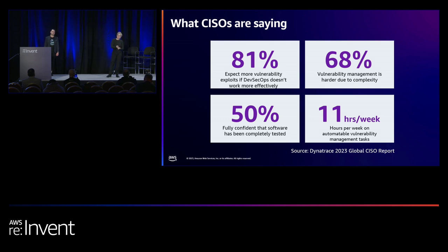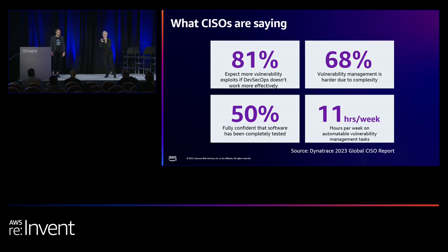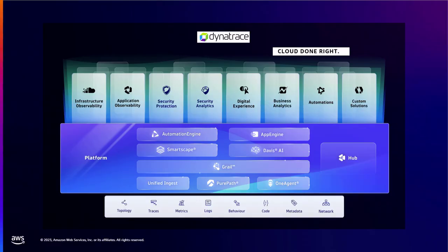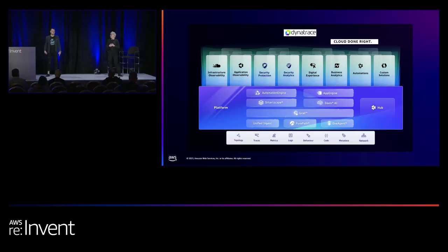There are real consequences to these opportunities for improvement — a direct cost on development teams in terms of productivity and lost innovation. Plus there's always risk. 50% of CISOs are only confident that their software is completely tested before it goes into production. That's a little scary.